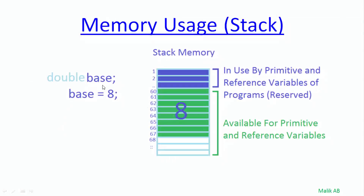Here you can see we are declaring variable 'base' but its type is double. As you know, for double we have to allocate 8 bytes, so these 8 bytes are allocated to this variable 'base', and we are storing a value of 8 — or we can store any larger value — in this base variable.